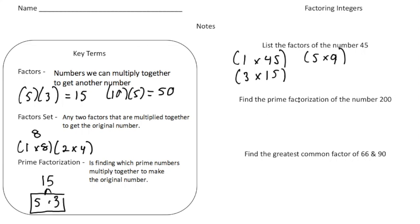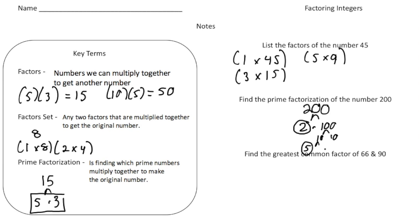Now it says find the prime factorization of the number 200. To find the prime factorization, you want to break it down to prime factors. So 200 we could break down to 2 times 100. We know 2 is prime, so I circle it — that part is done. But 100 is not prime, so 100 we write as 10 times 10. Both 10s are composite, so we break them down further: 10 is 5 and 2. Now 5 is prime and so is 2, so this 10 is also a 5 and a 2.